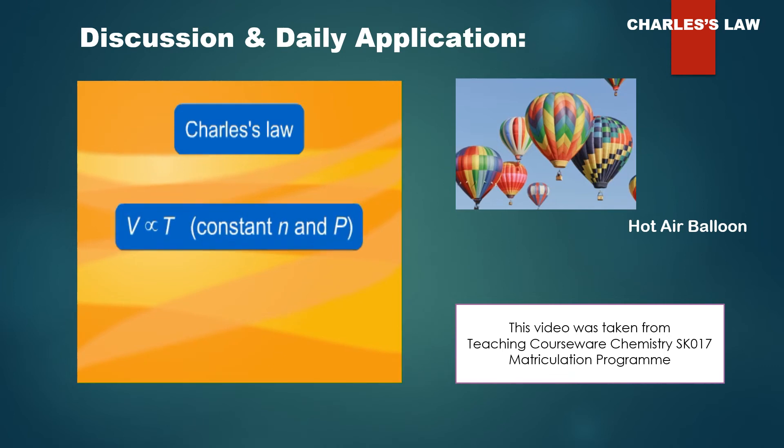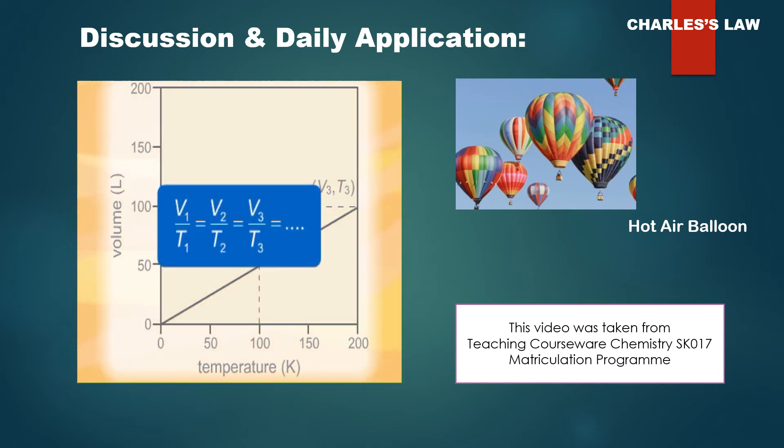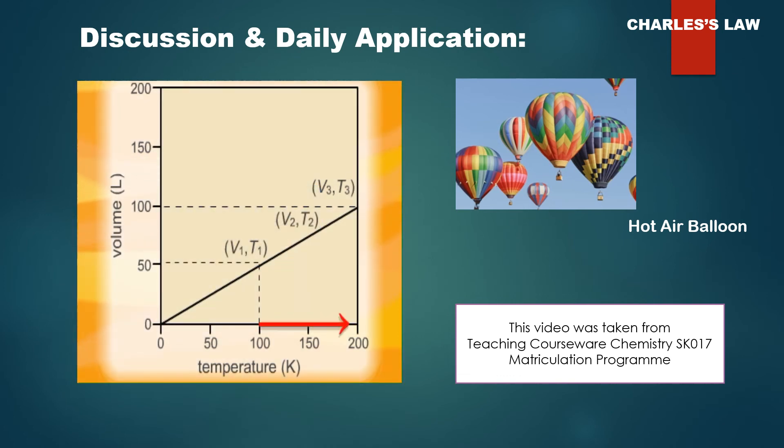The volume temperature relationship is known as Charles's law. For a fixed amount of gas at a constant pressure, the volume of the gas is directly proportional to its absolute temperature. This relationship can be expressed in the form of a graph by proportion or equations. We can see from the latter that the quotient V divided by T always equals the same constant for a given amount of gas at constant pressure.